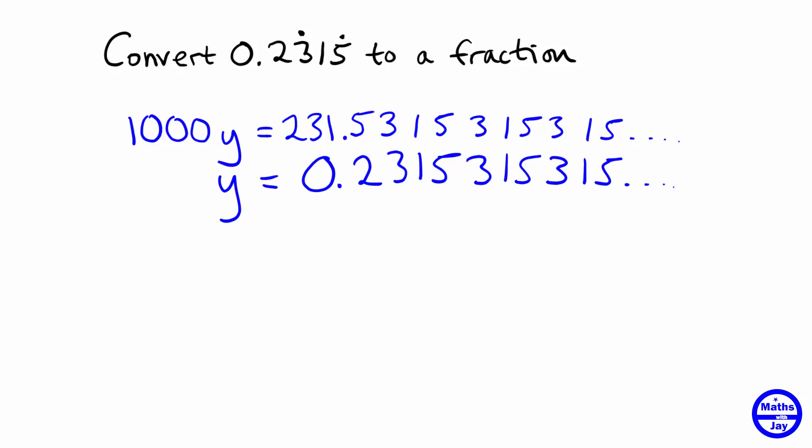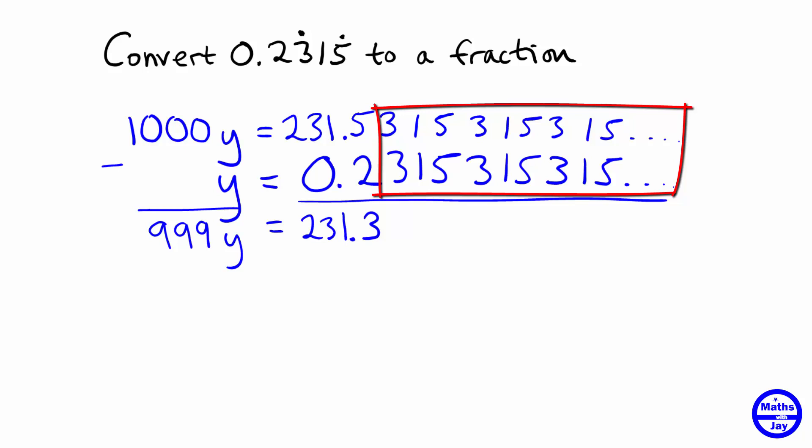So now you can see if I do a subtraction, 1,000 y minus y. And here's the trick, because on the right hand side, hopefully you can see by the way I've lined up these numbers, when we subtract the bottom number from the top, we end up with a very simple answer. So most of the right hand side cancels out. The 3 1 5 3 1 5 and so on, the 3 1 cancels out. So all we need to do is 5 minus 2 gives us 3. That's going to be the decimal part and the 231 stays the same. So we've got 231.3 on the right hand side.